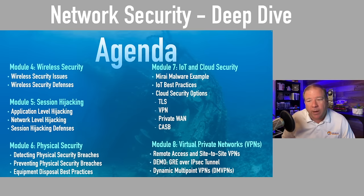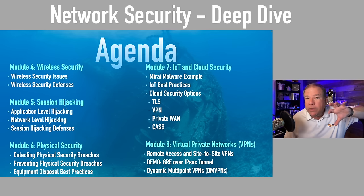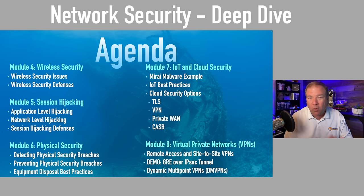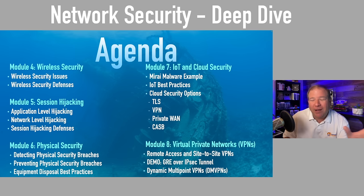We'll talk about emerging security threats with Internet of Things devices and cloud security — how do we protect as we're moving resources and data from on-premise data centers out to a cloud service provider. One way of getting security to the cloud is VPN technology, virtual private networks. We'll talk about different types of protocols that can be used, how we might use some of them together, and we're going to wrap it up with a discussion of dynamic multipoint VPNs.